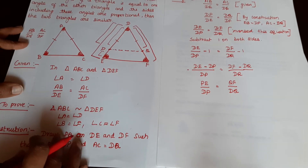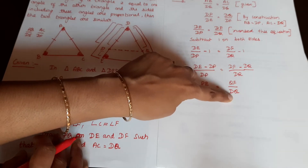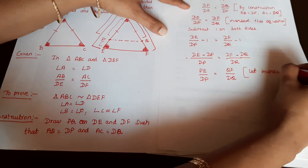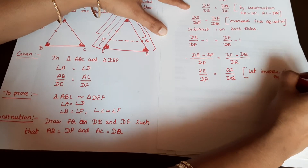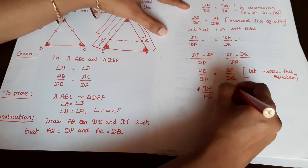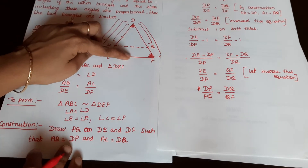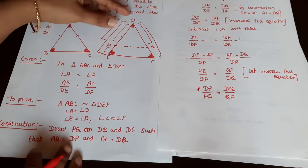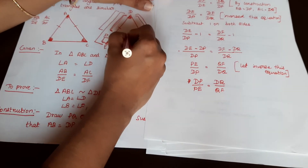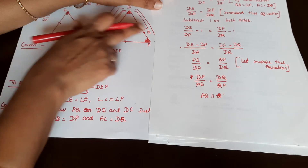By theorem 6.2, since DP by PE equals DQ by QF, we conclude that PQ is parallel to EF.